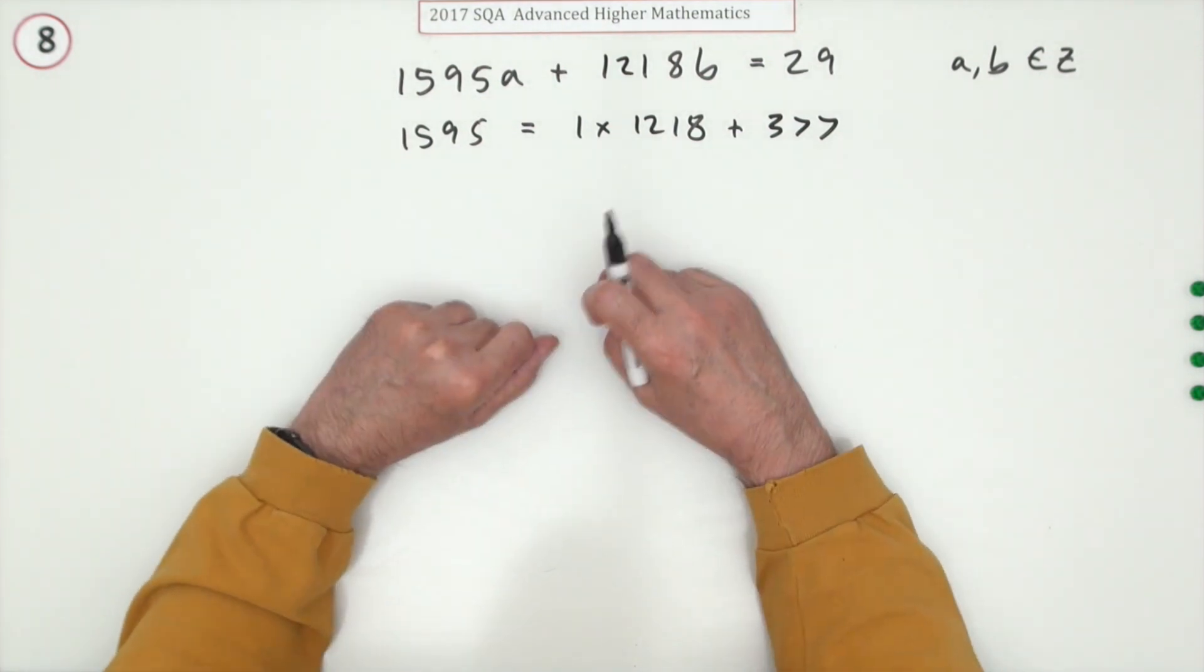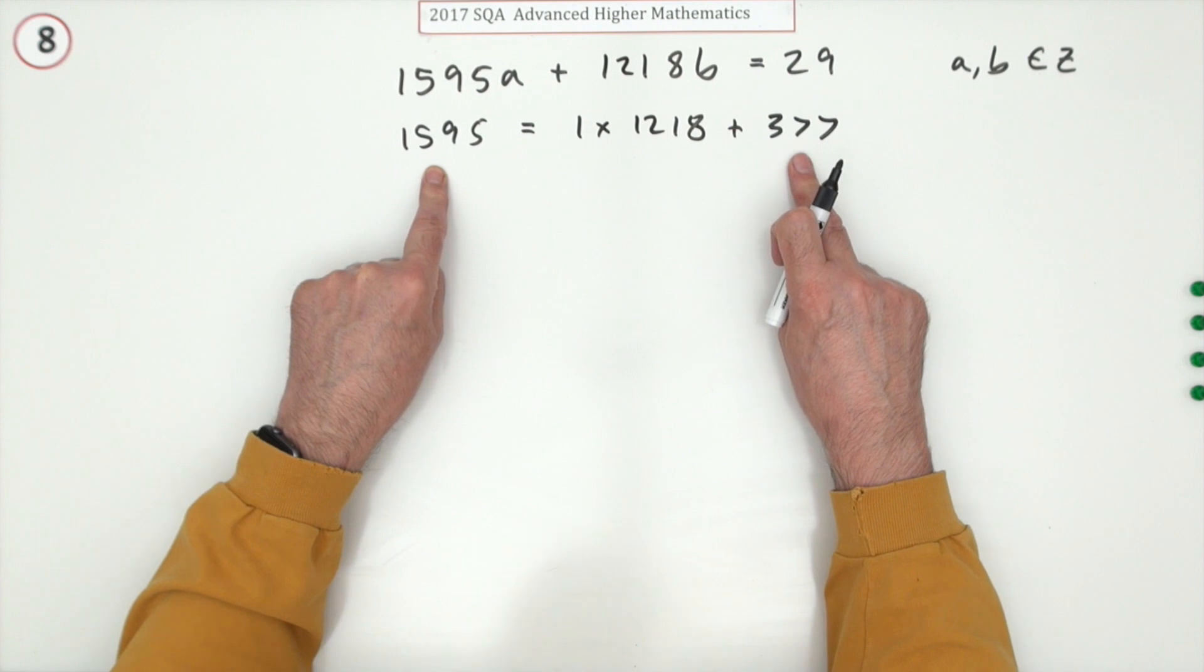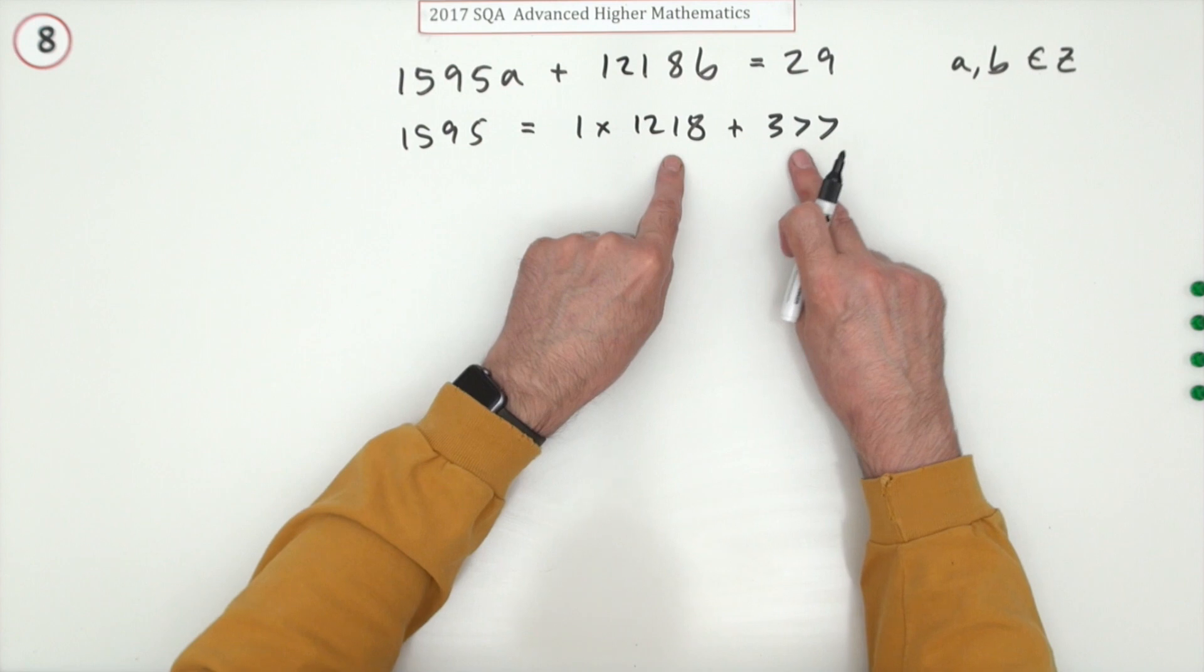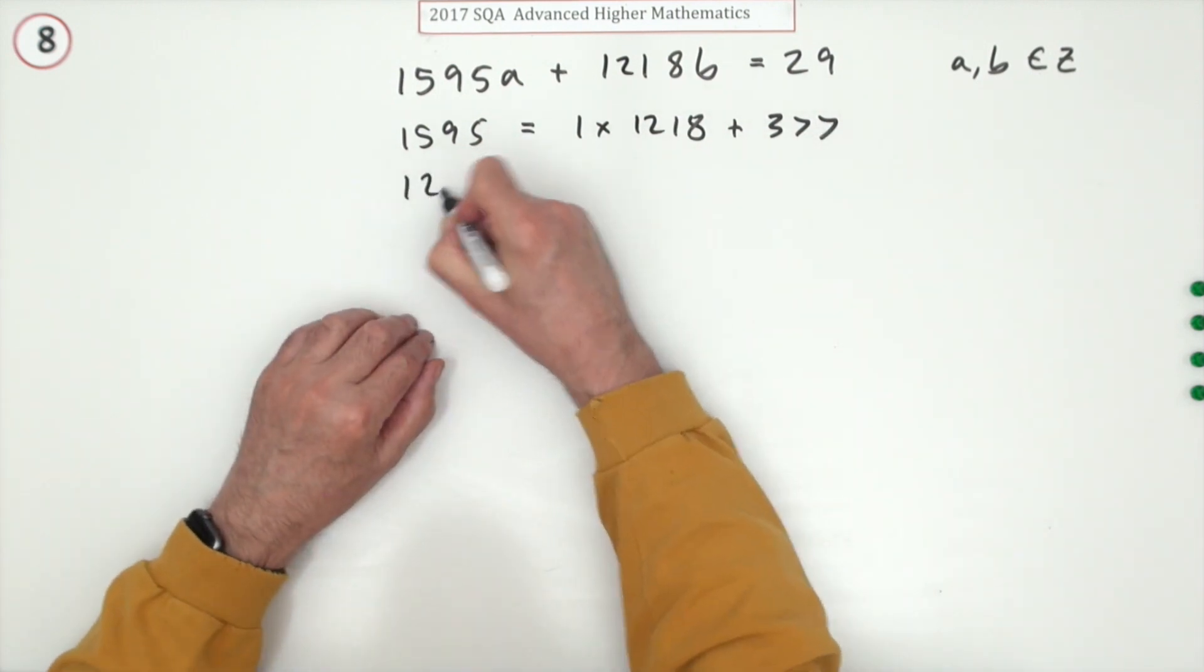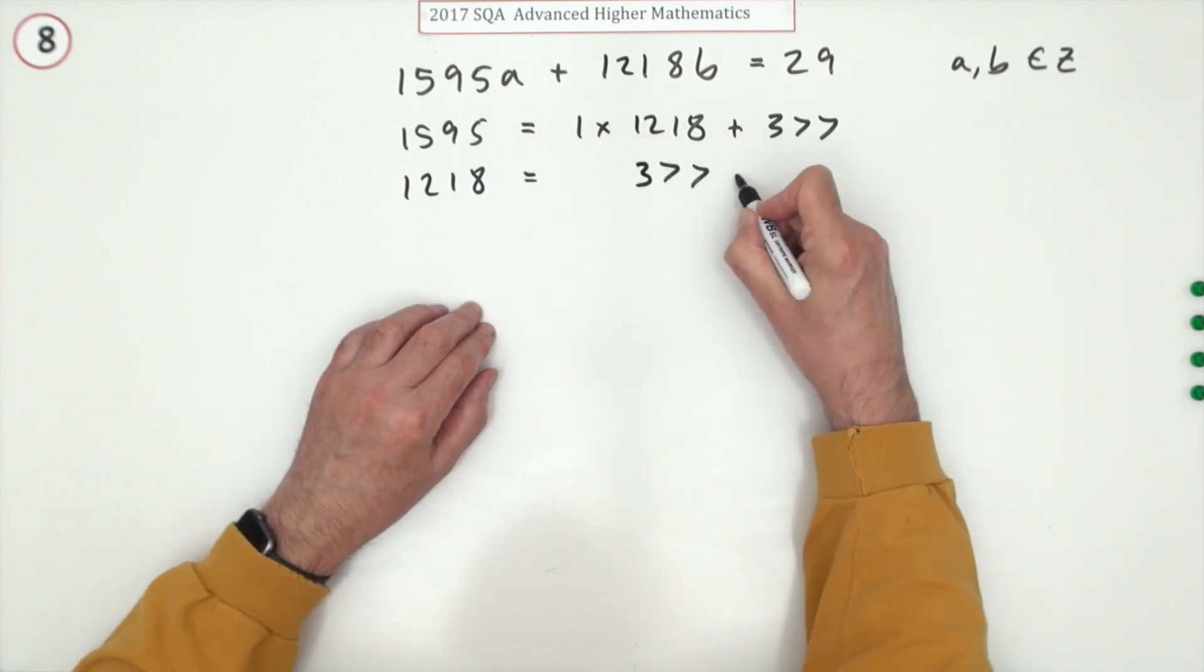Now it goes down to this - whatever divides those numbers must also divide this one. The greatest common divisor is now down to whatever the greatest common divisor of these two numbers are. So we start again with those two: 1218 will be how many times does 377 go into it.